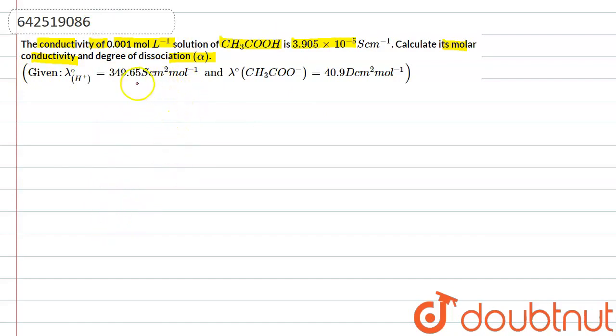So, step 1 is to calculate the molar conductance. Now, for that, we are provided the specific conductance, that is kappa, as 3.905 x 10^-5, and we will just use the units respectively. And the concentration is 0.001 mol-liter inverse.